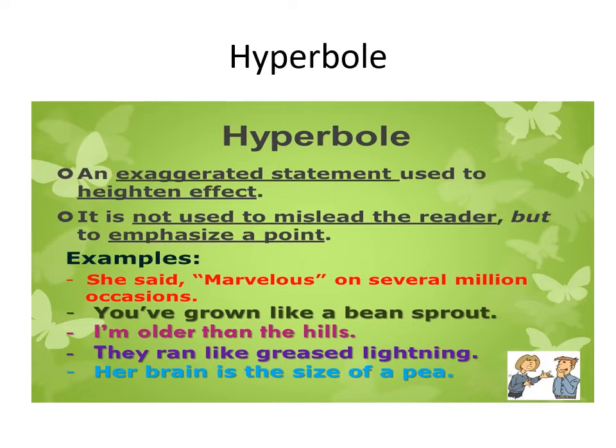Robert Burns says: 'I will love you till the seas run dry.' Can he survive until all the seas are dried up? This is a kind of exaggeration to prove his point — his eternal love for his beloved. It is no way misleading the reader.